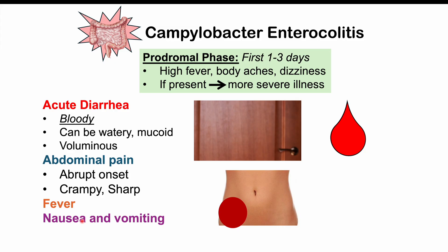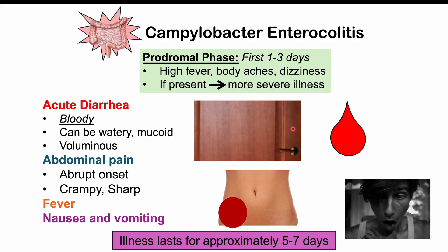Peak symptoms will occur for about 24 to 48 hours, with a sudden onset of acute diarrhea and abdominal pain. The worst of it occurs in the first 24 to 48 hours, then it slowly tapers off. The illness generally lasts approximately five to seven days in healthy patients without complications, though certain species can cause worsened complications.